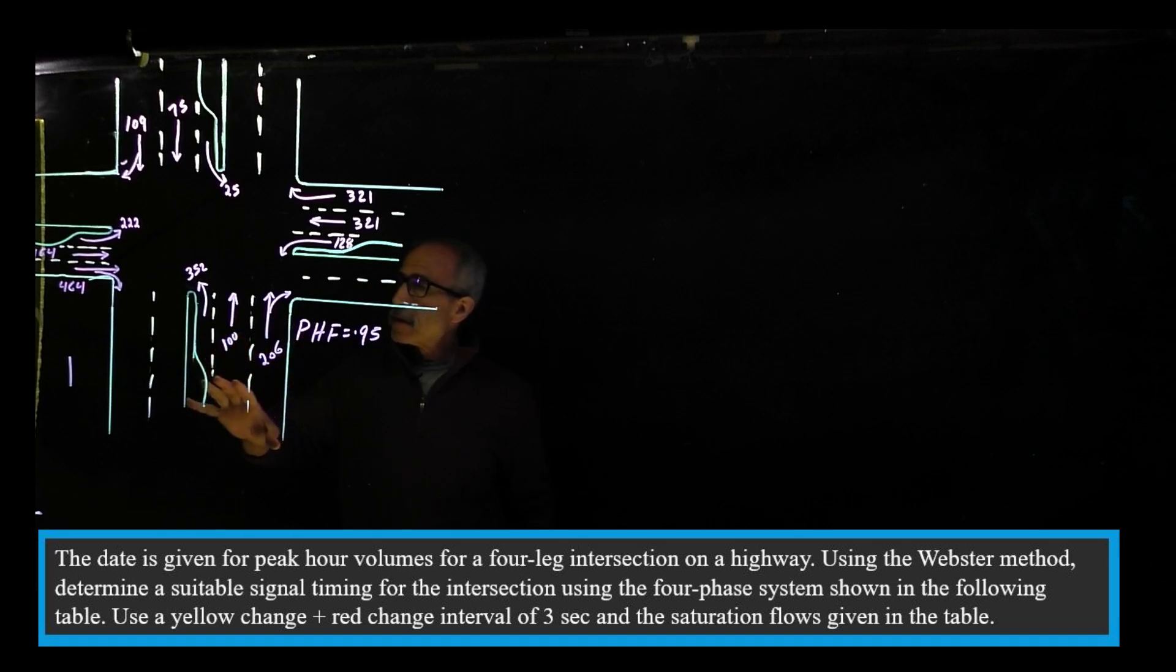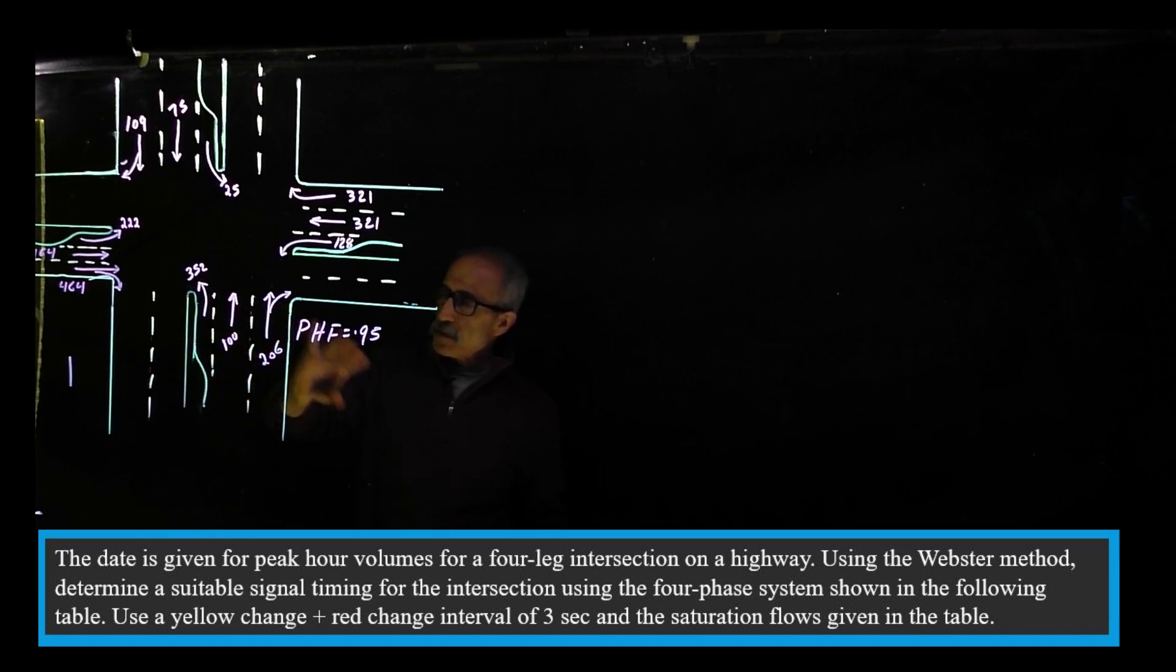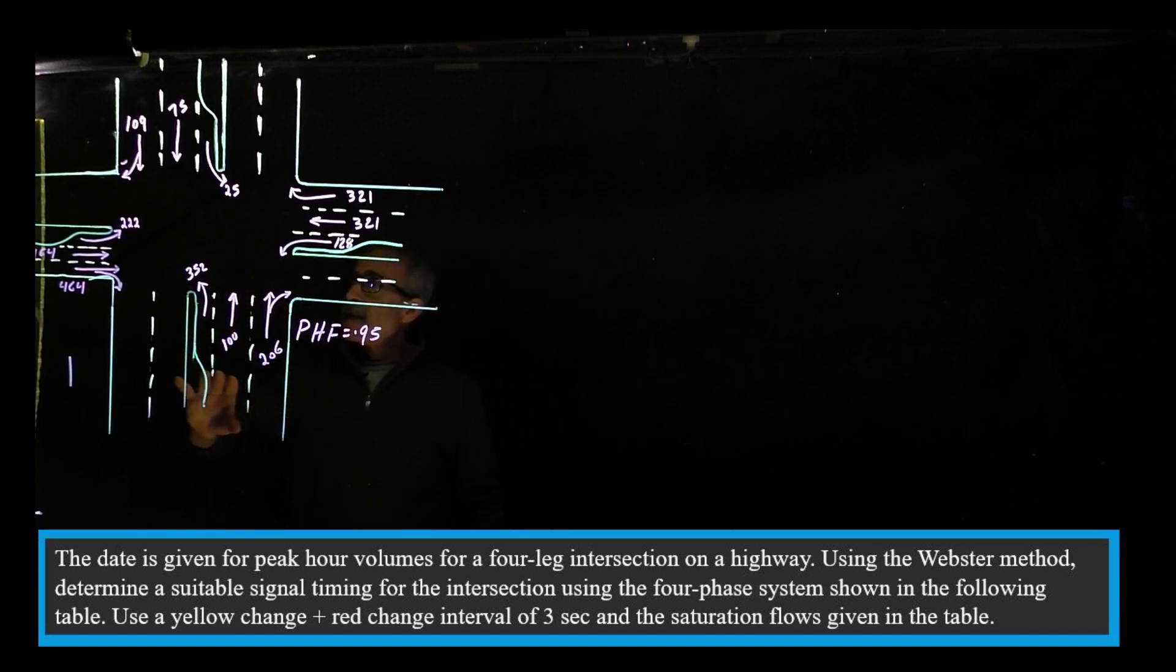The data has been given to us and peak hour factor is 0.95, that means we have to convert this to equal hour factor, which we'll do in a minute. As you can see we have traffic on our four phases.